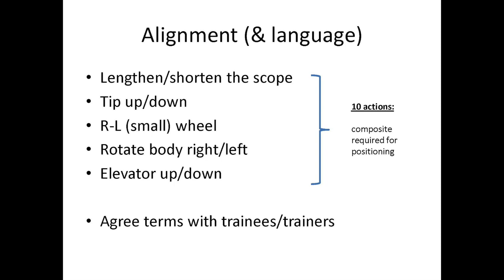The cornerstone to successful cannulation in training is understanding how to get your alignment right and agreeing on common language with your trainer. There are 10 composite movements which include: lengthening or shortening the endoscope by pushing in or withdrawing the scope from the patient; tip up or tip down using the large wheel; the right-left wheel — which is the small wheel — turned right or left; rotating your body clockwise or anti-clockwise; and using the elevator up or down. Agreeing on these terms makes successful training and cannulation much more straightforward.